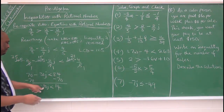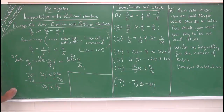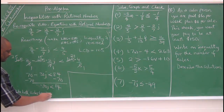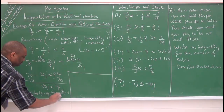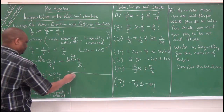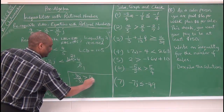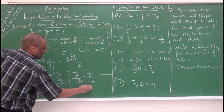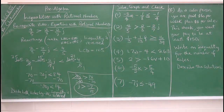Subtract 70 from both sides: negative 30j is less than 14. Then divide both sides by negative 30 — the inequality is reversed. So negative 30j over negative 30 becomes j is greater than 14 over negative 30. Simplifying by dividing by 2: j is greater than negative 7 over 15.